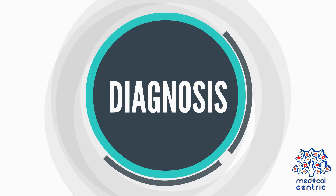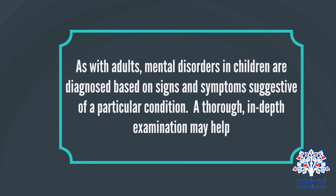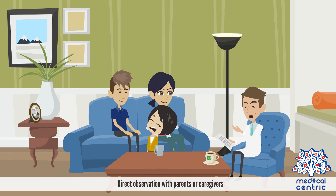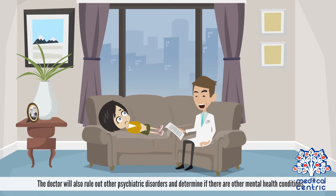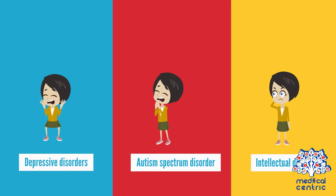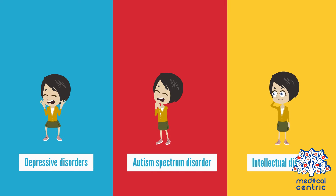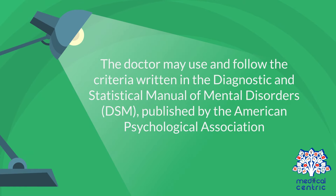As with adults, mental disorders in children are diagnosed based on signs and symptoms suggestive of a particular condition. A thorough, in-depth examination may help, which may include direct observation with parents or caregivers, details about the pattern of behavior over time, questions about the home and living situations since birth, information about interactions with parents or caregivers, and determining if there are other mental health conditions that coexist, such as depressive disorders, autism spectrum disorder, and intellectual disability.